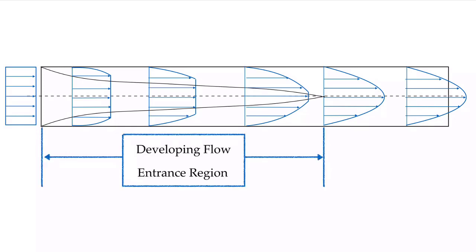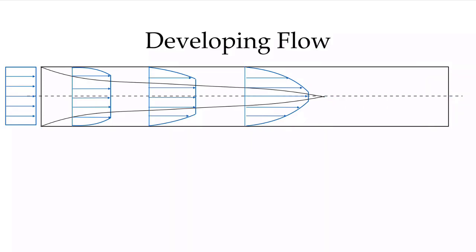That region until we hit the point where the velocity profile is no longer changing is called the developing flow region, or the entrance region. And that region after the velocity profile is no longer changing is called the fully developed flow.